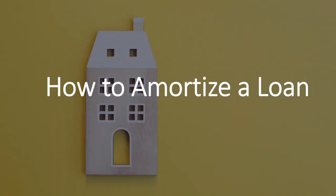How to amortize a loan. An amortized loan is a loan that is repaid with equal periodic payments over its life.